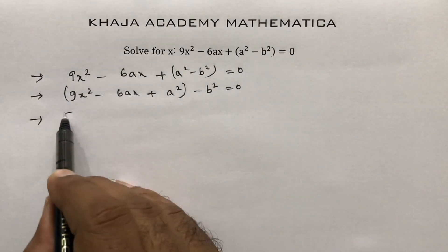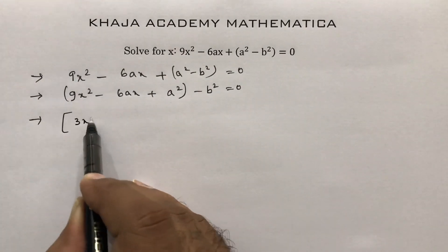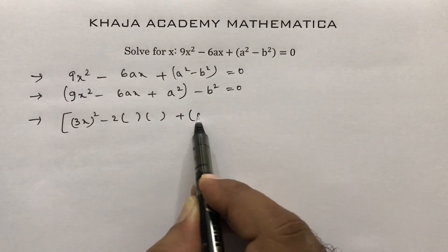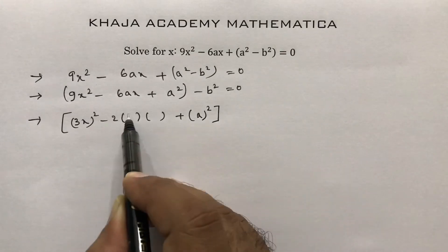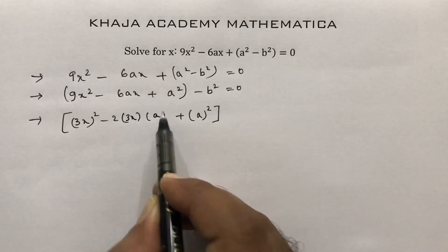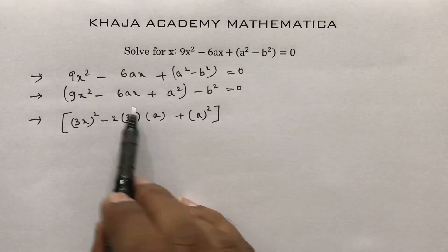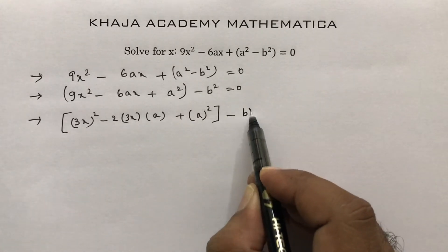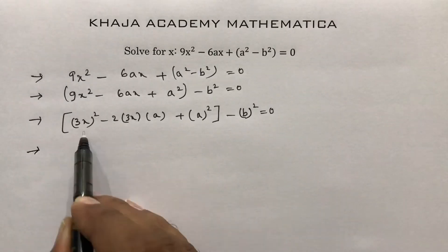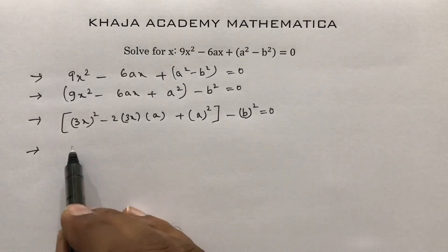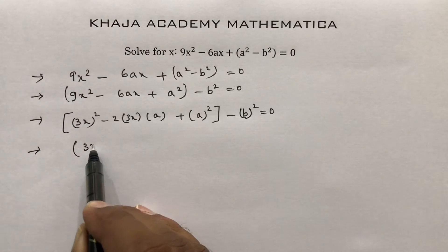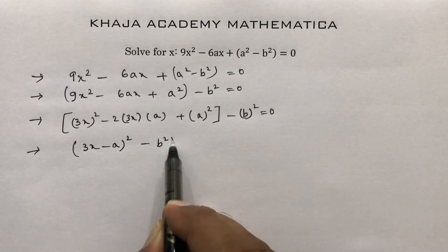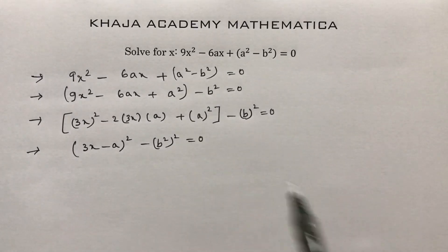Write 9x² as (3x)², and b² = a² is clear. Here a = 3x and b = a, and 2 × 3 = 6ax matches the middle term. So the expression becomes (3x - a)² - b² = 0.